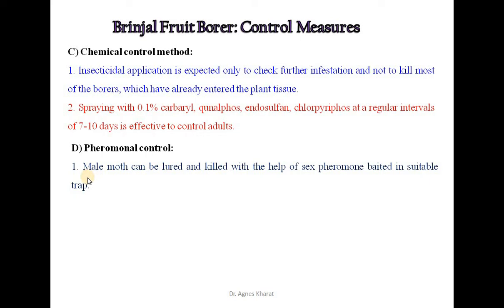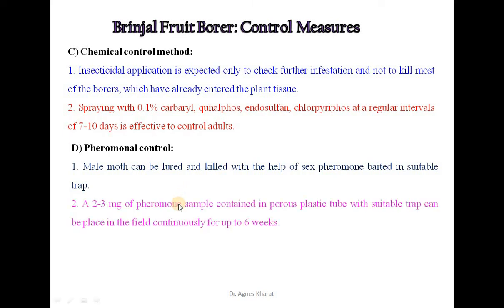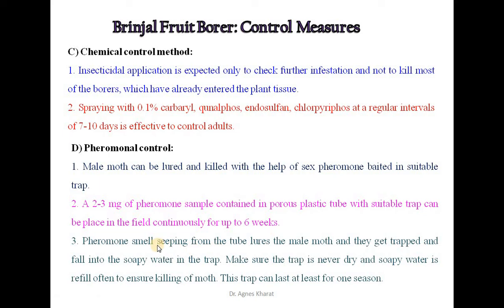Pheromonal control: male moths can be lured and killed with the help of sex pheromone baited in a suitable trap. A 2-3 mg pheromone sample contained in a porous plastic tube with a suitable trap can be placed in the field continuously for up to 6 weeks. The pheromone smell seeping from the tube lures male moths, which get trapped and fall into soapy water in the trap. The trap should never be dry and soapy water should be refilled often. This trap can last at least one season.